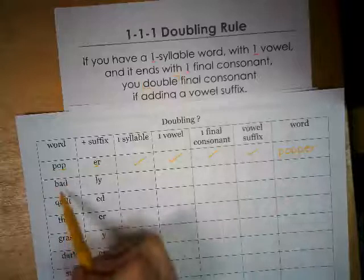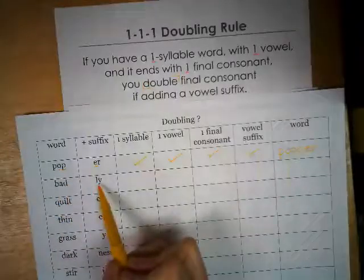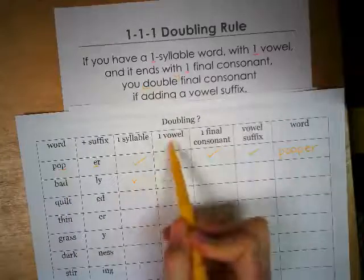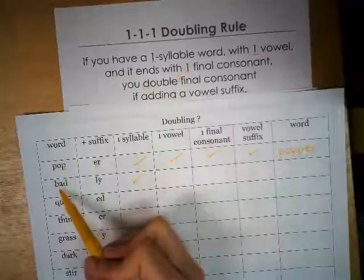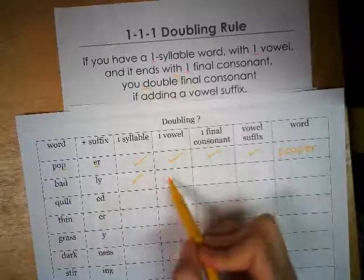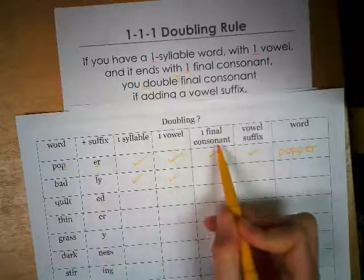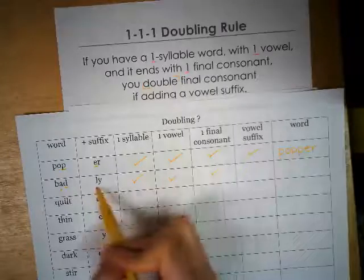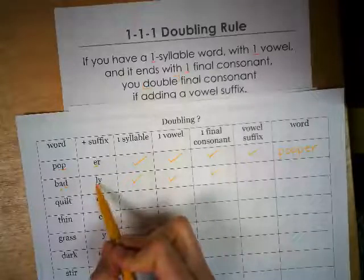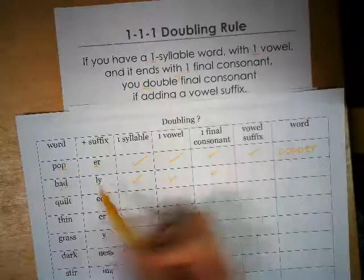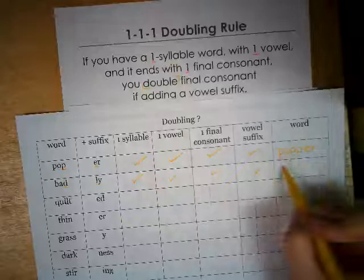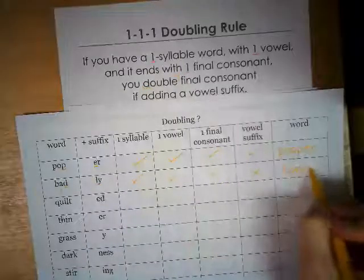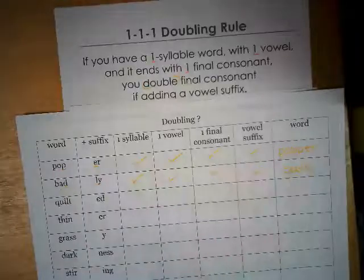Here's another word: 'bad' with the suffix 'ly'. Is it one syllable? Bad is one syllable. Is there one vowel? Yes, A. One final consonant? Yes, just D. And is it a vowel suffix? No, it's actually a consonant suffix. So we don't have to worry about this — we didn't even have to go through those steps. We just write 'bad' and add 'ly'. The word is 'badly'.